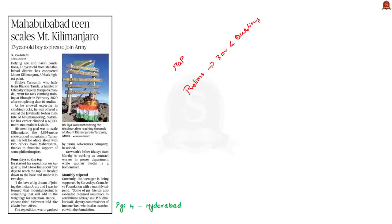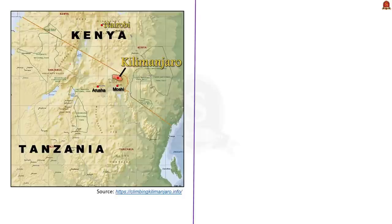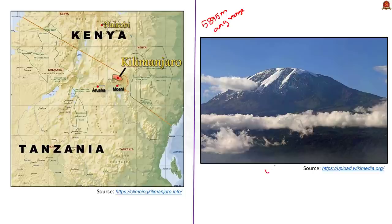Now let us move on to the first question, which is regarding Mount Kilimanjaro located in Tanzania. Four statements are given and we have to find which statement is correct. The first statement: Mount Kilimanjaro is the tallest freestanding mountain in the world. The statement is correct — it reaches a height of 5,895 meters. A freestanding mountain is a mountain that stands alone and is not part of any mountain system. If the statement said 'tallest mountain in the world,' it would be wrong, since Mount Everest holds that title. Mount Everest is not a freestanding mountain as it is part of the Himalayan range.